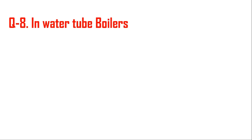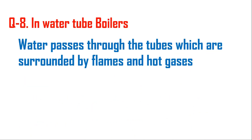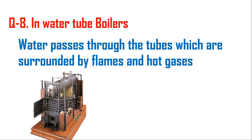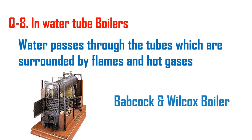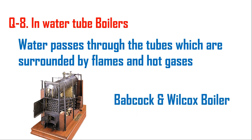Question number eight: in water tube boilers, water passes through the tubes which are surrounded by flames and hot gases. As already discussed, the example is Babcock and Wilcox boiler — in the inclined tubes there is water, and surrounding the tubes are the flue gases.